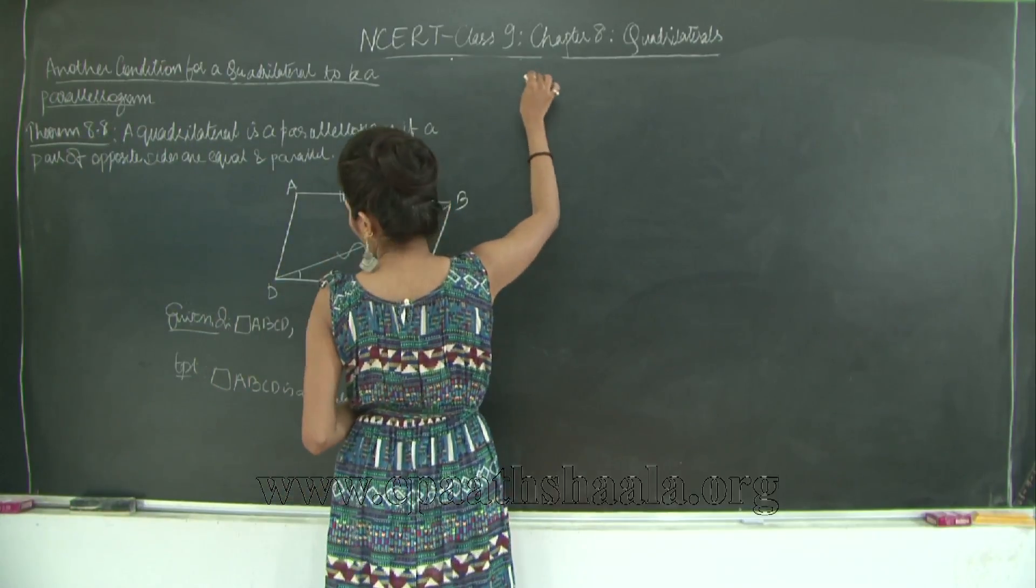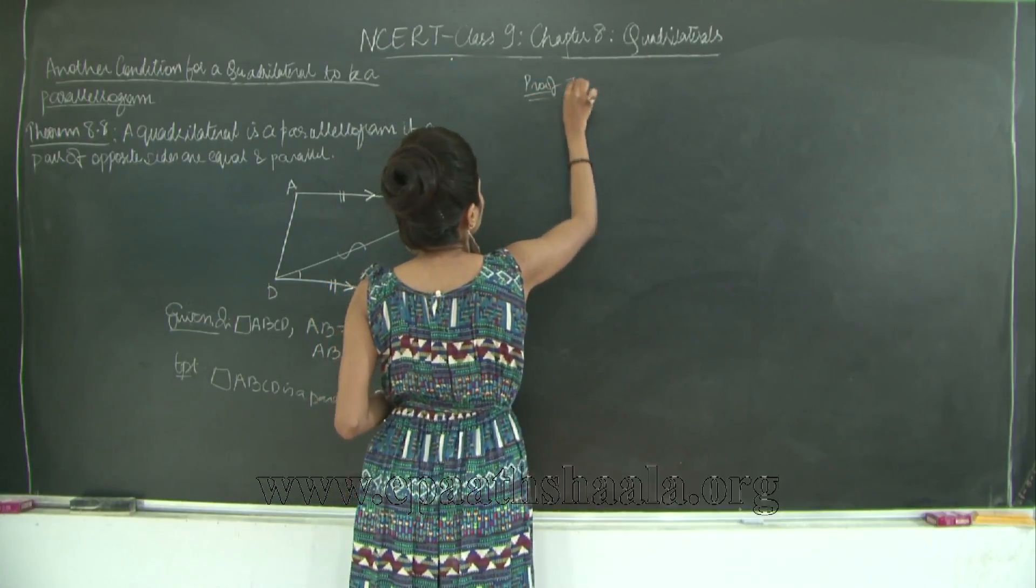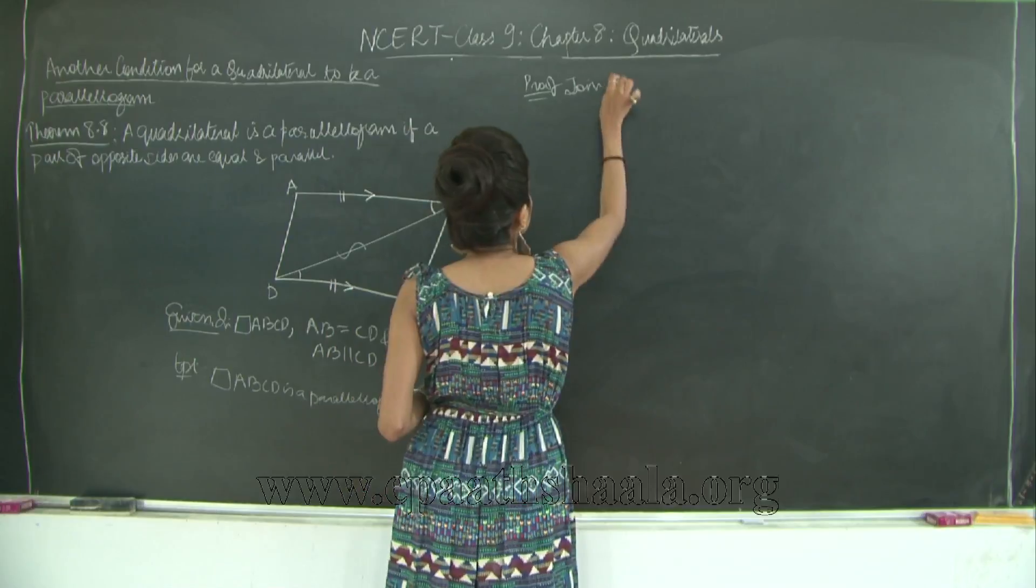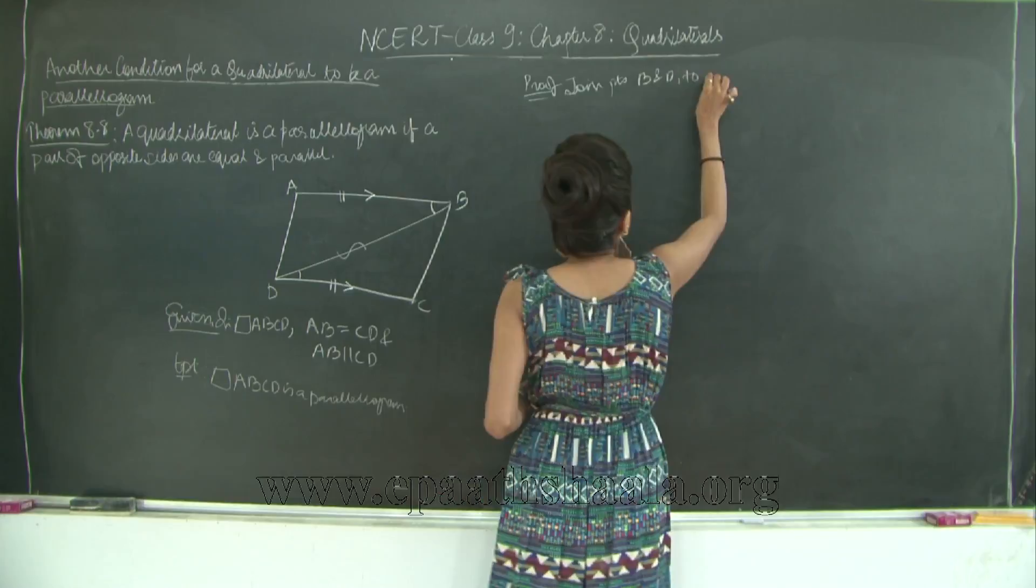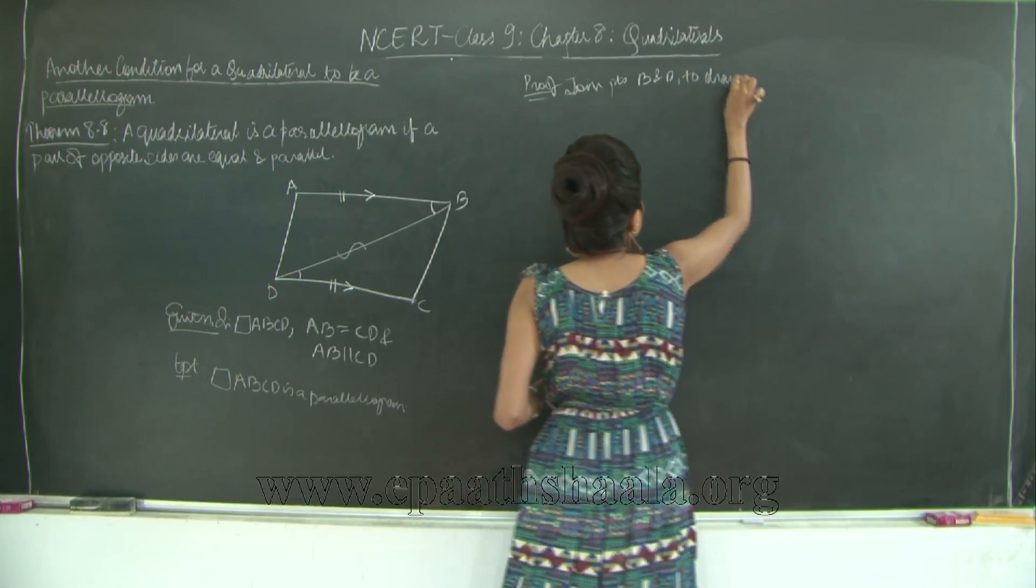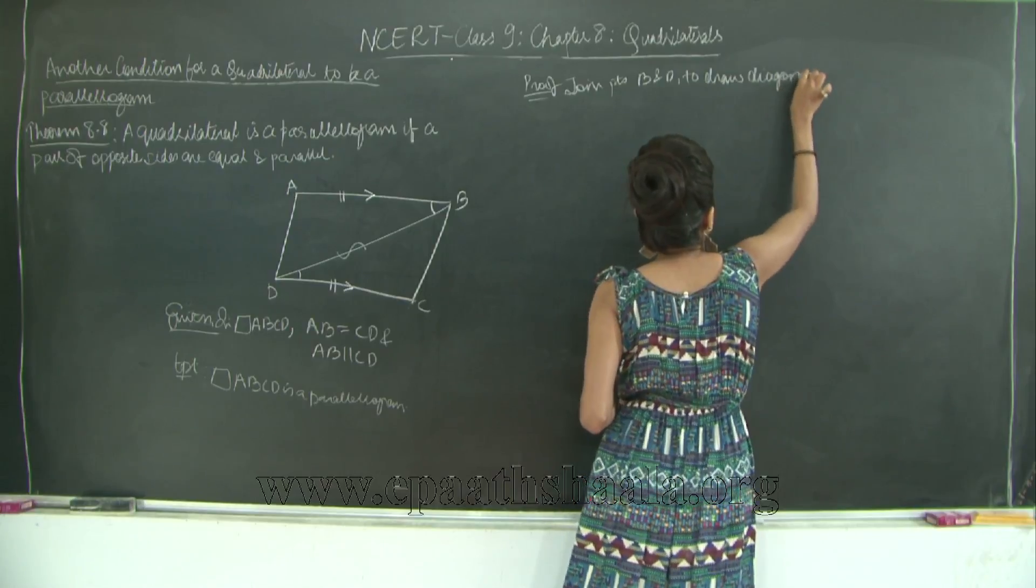So I will say in the proof: join points B and D to draw diagonal DB.